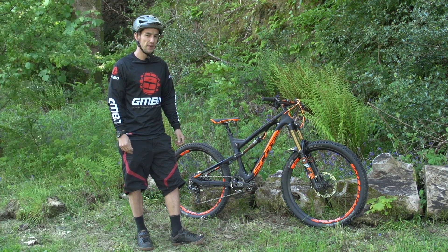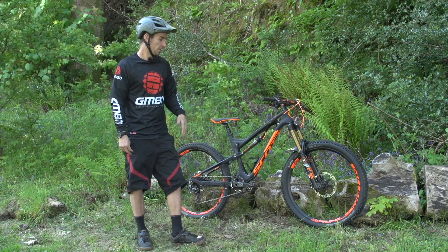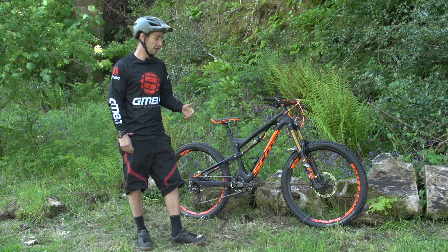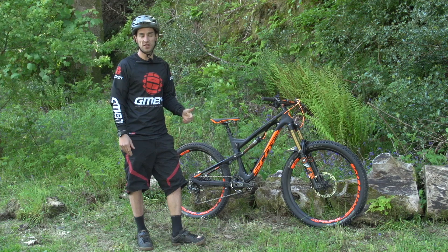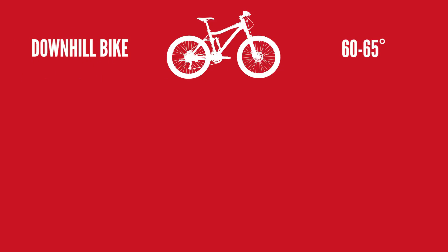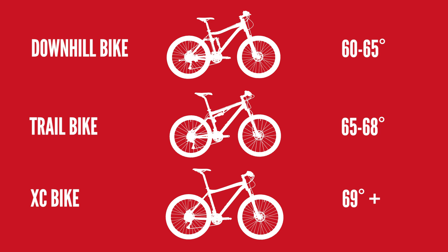Some of the slackest downhill bikes now go down to almost 60 degrees, so that's really raked out. The lower the number, the slacker that bike is. The trend has been going slightly slacker with all bikes the last few years, even trail bikes. The bike industry seems to have settled on about 60 to 65 degrees for downhill bikes, 65 to 68 for trail bikes, and then 69 plus for short travel XC bikes and hardtails.